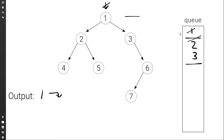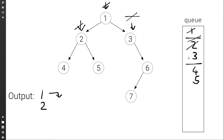We go back to the queue and we set current to the front of the queue: two. We pop the front of the queue, we print two on a new line, and we add the left child to the queue, four, and then the right child, five. We go back to the queue and we set current to the front of the queue, so three. We pop the front of the queue, we print three, and we add the right child to the queue — three doesn't have a left child.